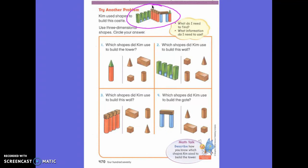She used three dimensional shapes, which we've been talking about. And it says to circle your answer. Which shapes did Kim use to build the tower? So here's the tower. And then you have to circle which shapes she used to build this tower.